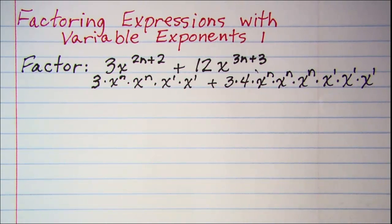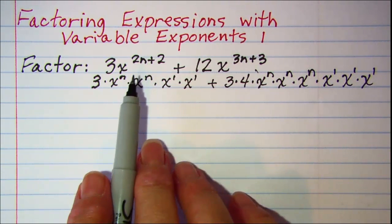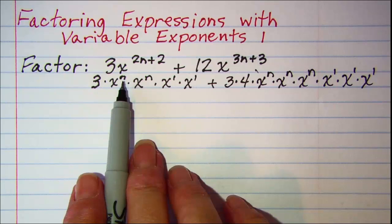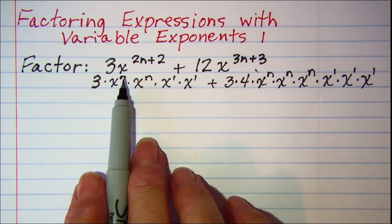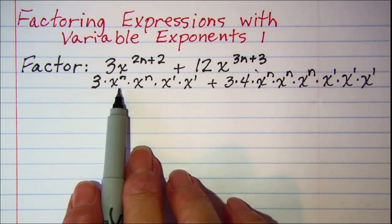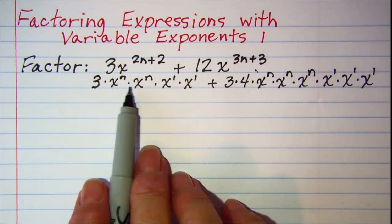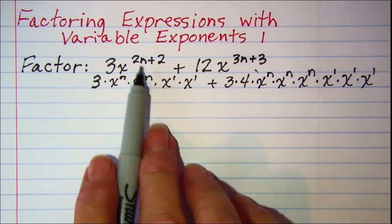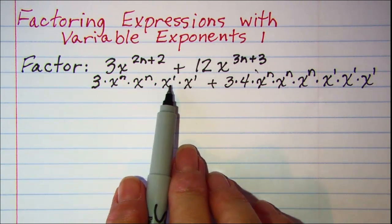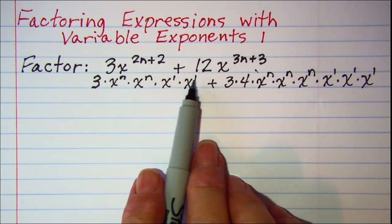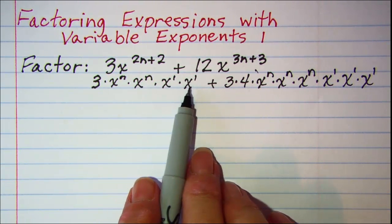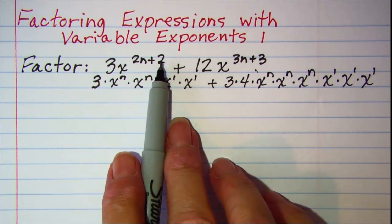Now just to make sure that we have this done correctly, remember that when you multiply two exponentials you add the exponents. So x is the base on these and then n plus n is indeed 2n. Also for these, again add the exponents so 1 plus 1 is 2, so this is my x squared.